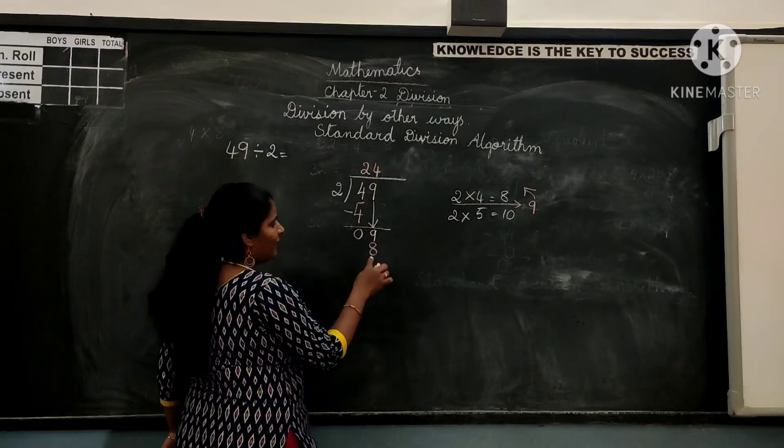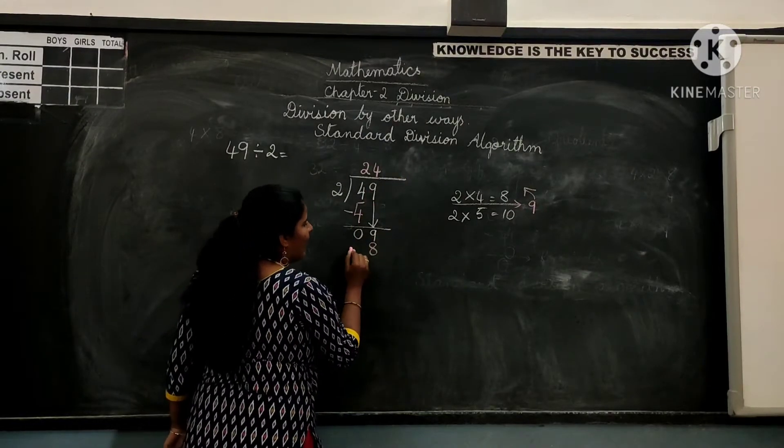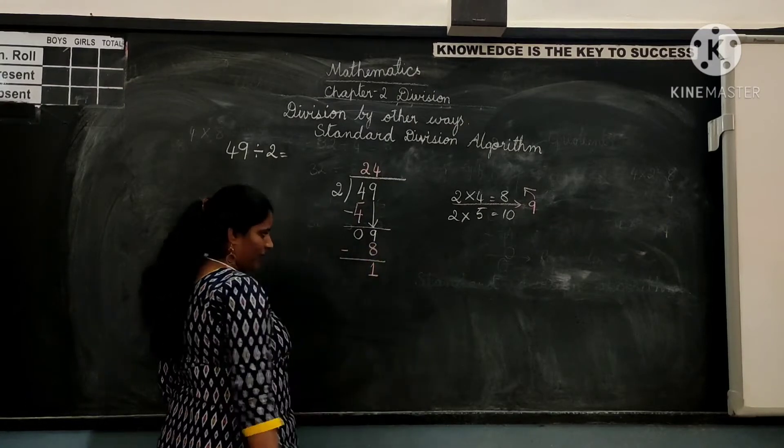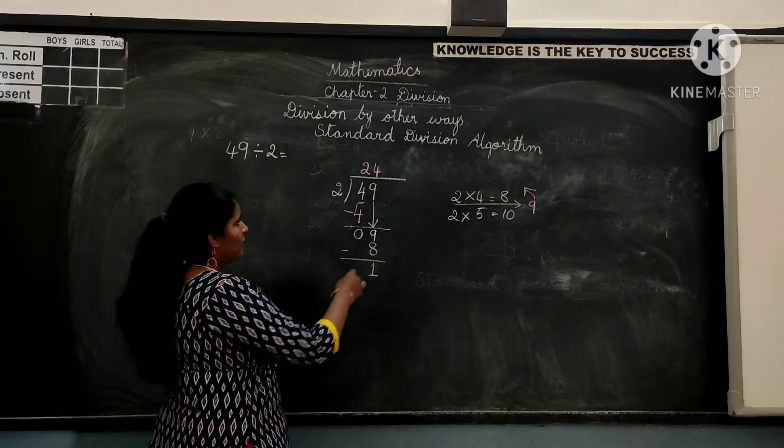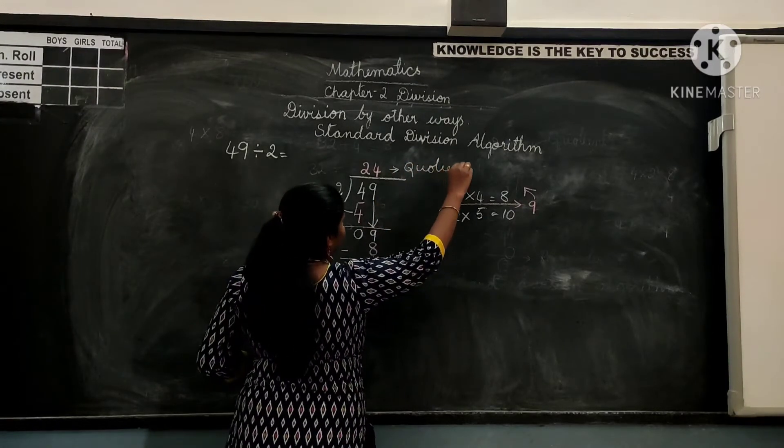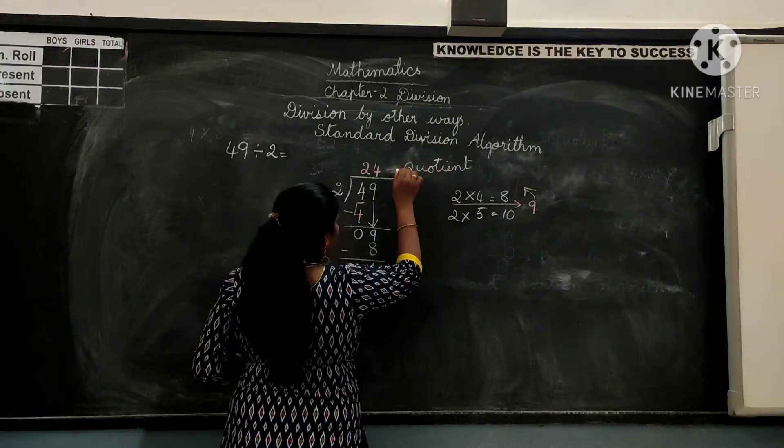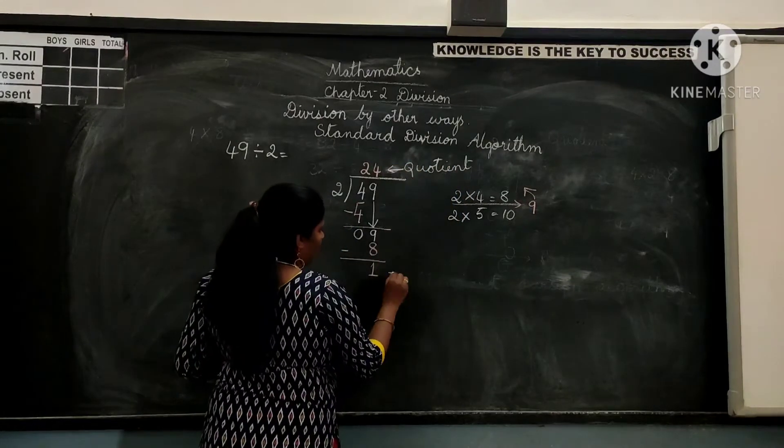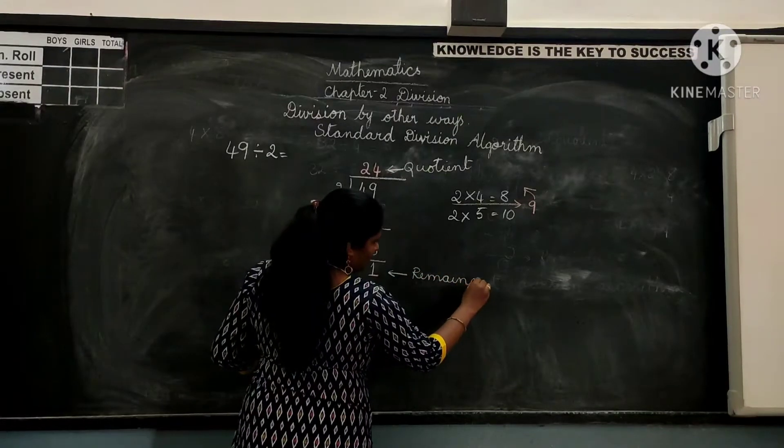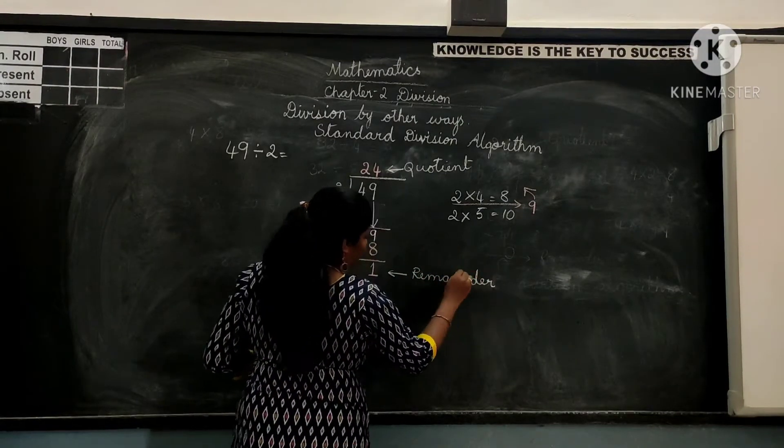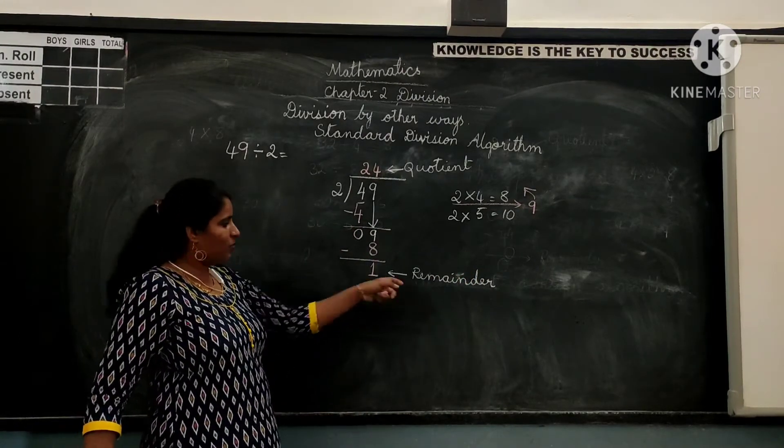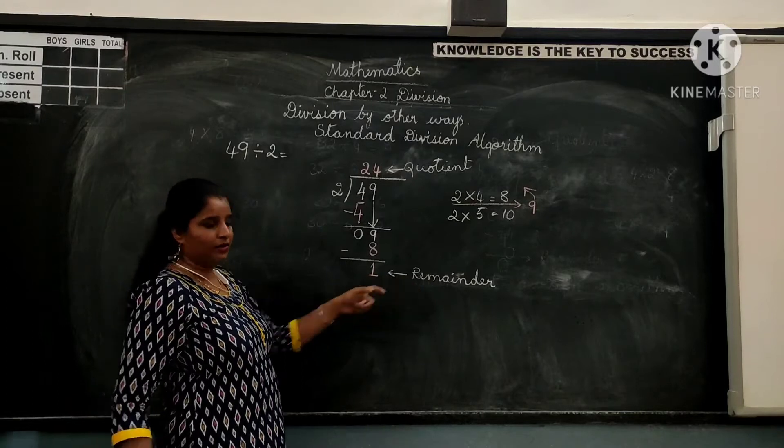2 four times give us 8. So write 4 in quotient space. And 8 below the dividend. And then subtract. So 9 minus 8 gives you 1. So here 24 is the quotient. 1 is the remainder. Since 1 is smaller than 2, it cannot be further divided by 2. So 1 becomes the remainder.